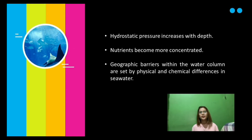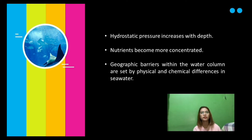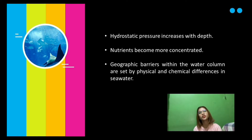Vertical gradients in environmental parameters are predominant features of the oceans, and these establish depth zones with different types of living conditions. Not only does light diminish with depth, but temperature also decreases to a constant value. On the other hand, hydrostatic pressure increases with depth and nutrients become more concentrated. Because of depth-related changes in environmental conditions, many marine animals tend to be restricted in range. Geographic barriers within the water column are set by physical and chemical differences in seawater.